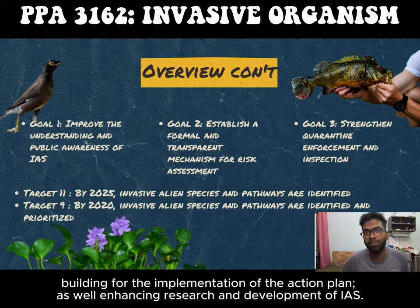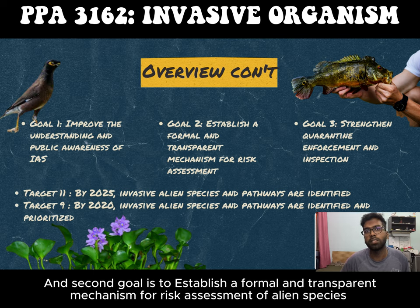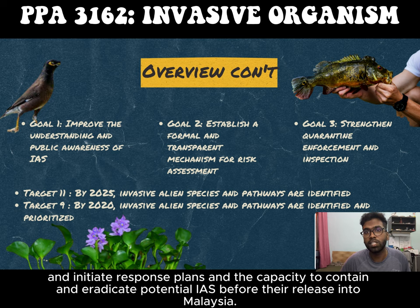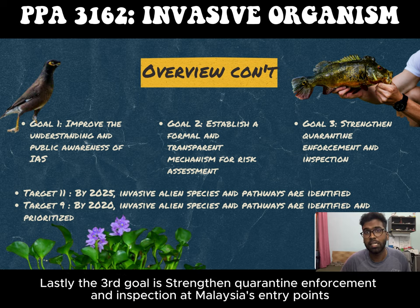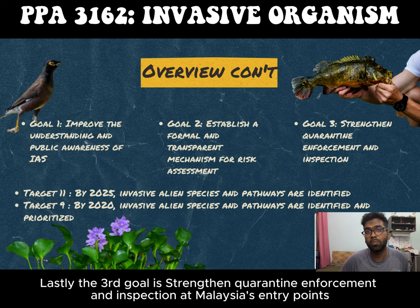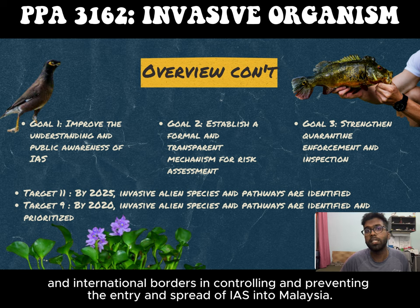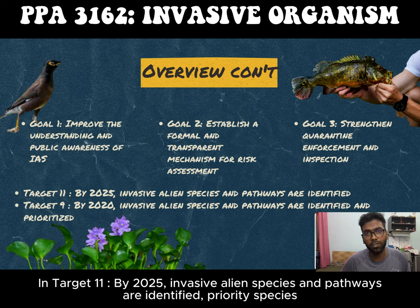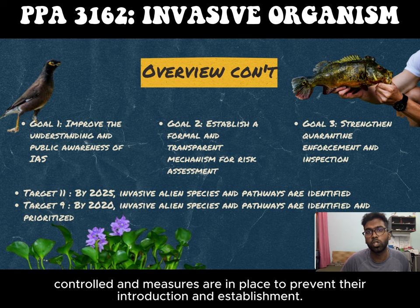The second goal is to establish a formal and transparent mechanism for risk assessment of alien species and initiate response plans and their capacity to contain and eradicate potential IAS before they are released into Malaysia. The third goal is to strengthen quarantine enforcement and inspection at Malaysia's entry points and international borders in controlling and preventing the entry and spread of IAS into Malaysia. Under Target 11, by 2025, invasive alien species and pathways are identified and priority species control and measures are in place to prevent their introduction and establishment.